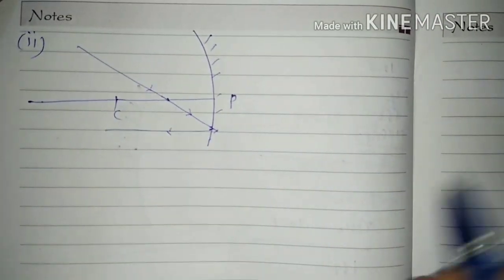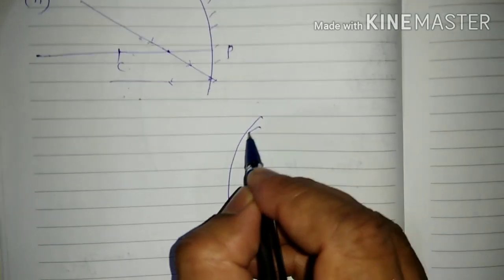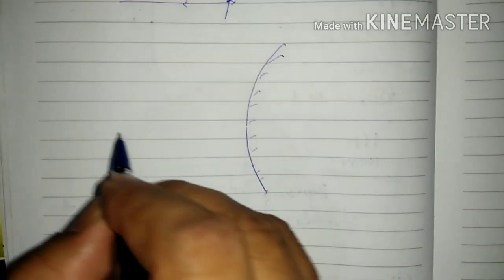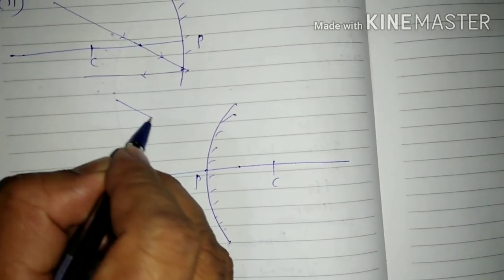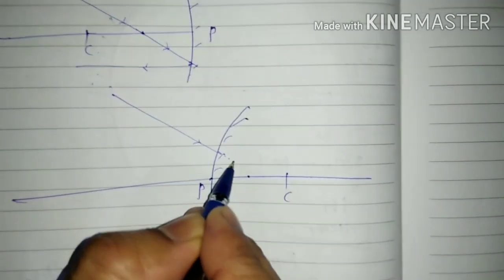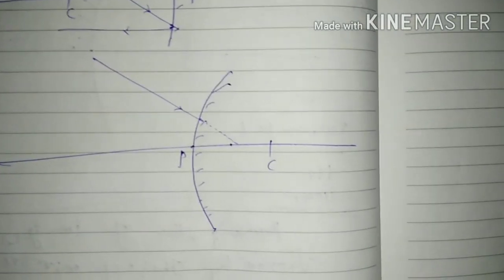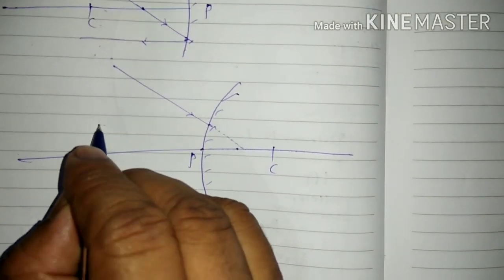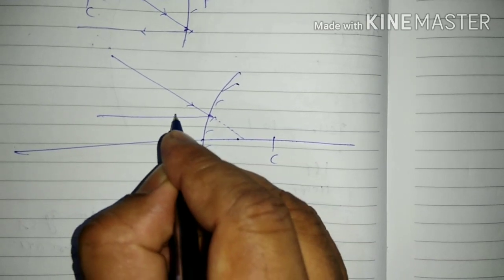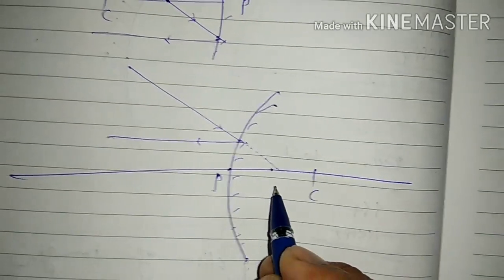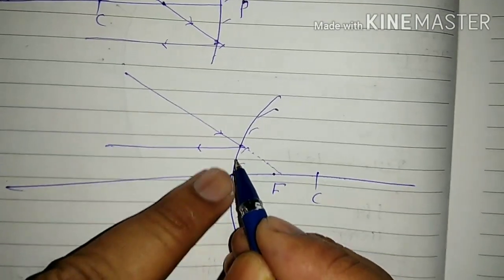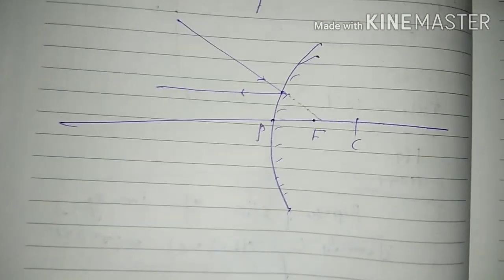For a convex mirror, if rays of light are incident in such a way that they appear to pass through its focus, then after reflection these rays become parallel to the principal axis. This is the virtual case — rays incident appearing to pass through focus become parallel after reflection.